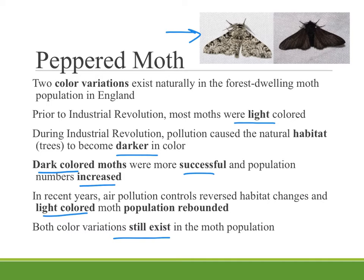Sometimes the peppered moth example is held up as an example of evolution, and it is an example of microevolution — changing within a species so that one trait is much more abundant than another. Perhaps ultimately you could get to a point where there were no more light-colored moths if the pollution stayed around. But it is not an example of the macroevolution that would turn one species into something entirely new. I think it's more important to talk about this as natural selection, because that is what it is — an example of change within a species, not of species changing.